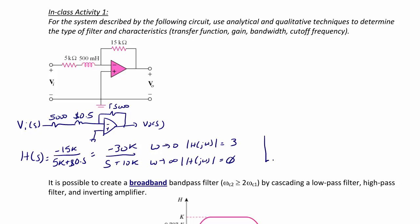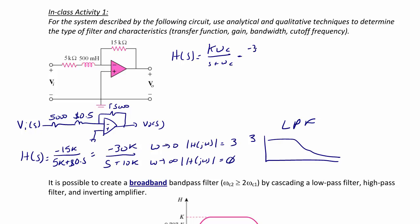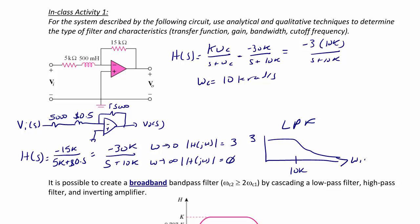We see that we have a low-pass filter with a gain of 3. Comparing to the standard form H(s) = k·ωc / (s + ωc), we have negative 30k over (s + 10k), so k equals negative 3. Using magnitude, k is positive 3, giving us negative 3 times 10k over (s + 10k). The cutoff frequency is 10 kiloradians per second, at which the magnitude is 3 over the square root of 2. The passband is 10 kiloradians per second and the gain magnitude is 3.